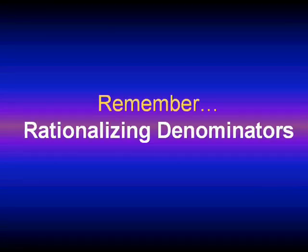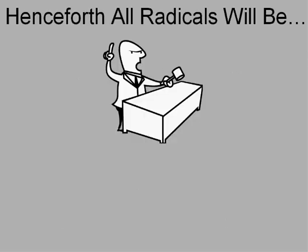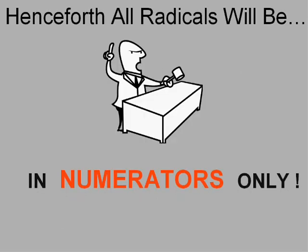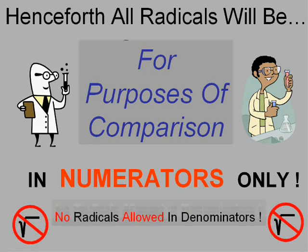Last time on 'Who Wants to Be a Millionaire,' we covered mixing radicals with fractions and decided that from now on you're only allowed to have radicals in the numerator of an answer. That's for purposes of comparison, so everybody writes their answer in the same fashion. So no radicals — basically, no radicals are allowed in the denominators.